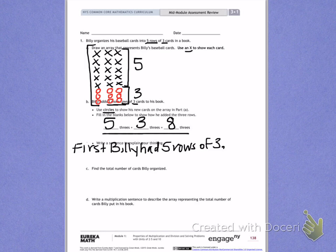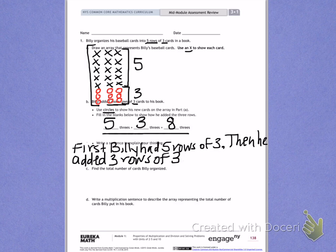After that, he added three more rows of three. So I'm going to add that as my next sentence. Then, he added three rows of three. In total, Billy had eight rows of three. So that's going to be my last sentence. Billy had eight rows of three.